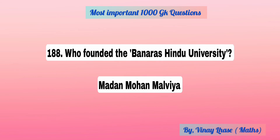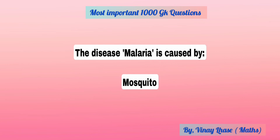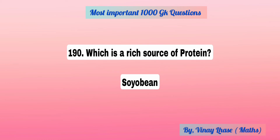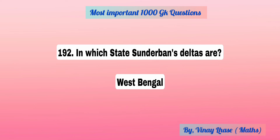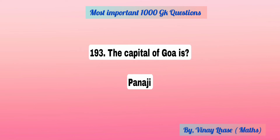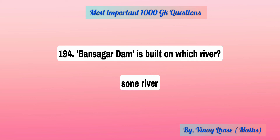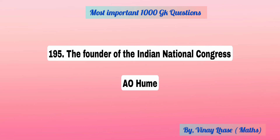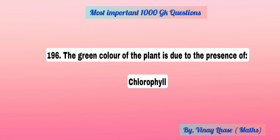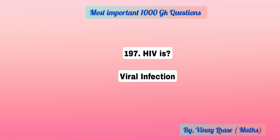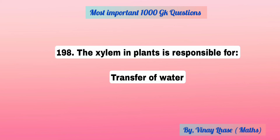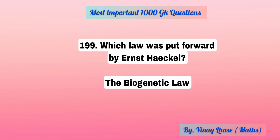Who founded the Banaras Hindu University? Madan Mohan Malaviya. The disease malaria is caused by mosquito. Which is a rich protein source? Soya bean. In which state are Sundarbans deltas located? West Bengal. Capital of Goa is Panaji. Bansagar Dam is located on Son River. Founder of Indian National Congress: A.O. Hume. The green color of the plant is due to the presence of chlorophyll. HIV is a viral infection. Xylem in the plant is responsible for transfer of water.